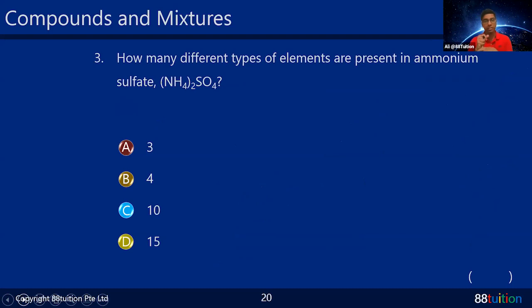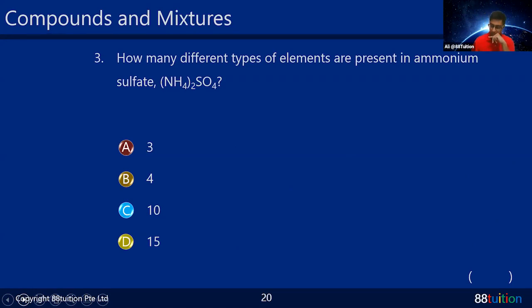Question 3 is very easy. Count the number of elements in ammonium sulfate — (NH4)2SO4. N is on the periodic table, H is available, S is available, O is available. So the answer is B — four elements: nitrogen, hydrogen, sulfur, and oxygen.